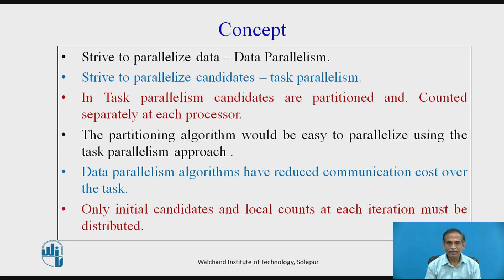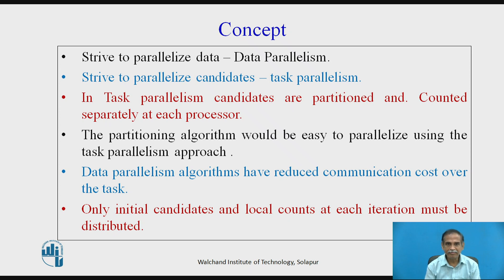Here we try to understand the concept. We strive to parallelize data, which is called data parallelism, and we strive to parallelize the candidates in the data, which is task parallelism. So there are two types of parallelism: data parallelism and task parallelism. In task parallelism, candidates are partitioned and counted separately.